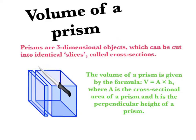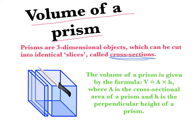Today we're going to have a look at calculating volumes of different prisms. A prism is a three-dimensional object that can be cut into identical slices. I've got a square prism here — I've cut slices of it and each slice I cut is identical to the one beforehand. I call these slices cross sections, and they are very important when we look at volume. The volume of a prism equals the area of the cross section multiplied by the perpendicular height.